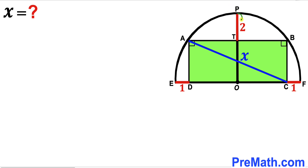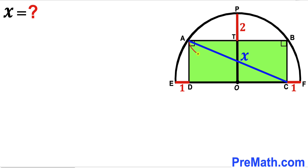Furthermore, segment PT is two units and this diagonal AC is being represented by X. Our task is to find the value of X — in other words, we are going to find the value of this length AC.